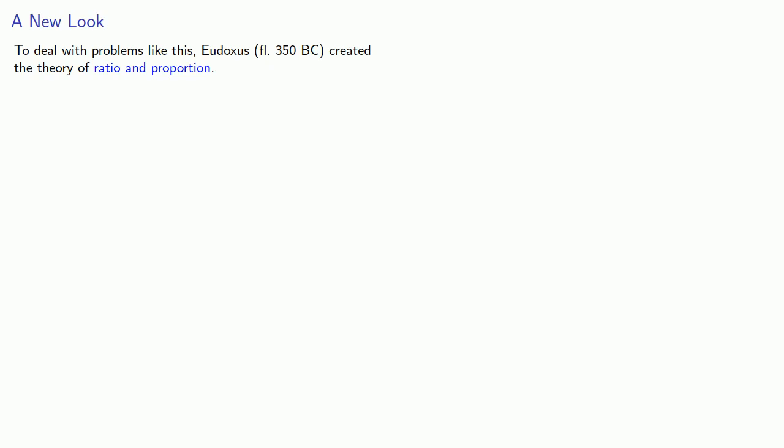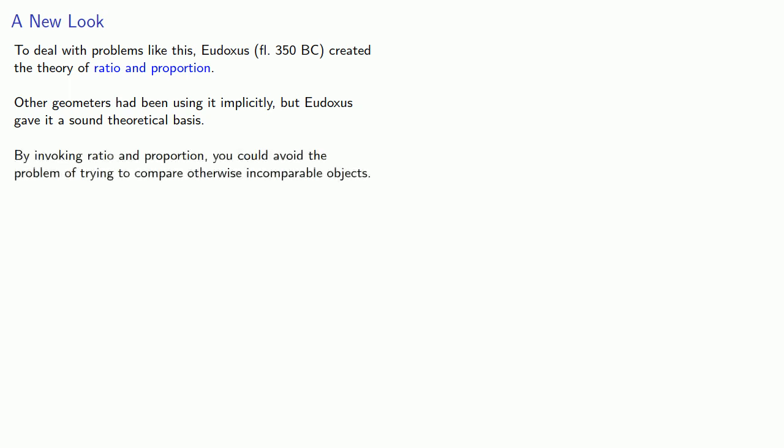Now, when we say created the theory of ratio and proportion, what we mean is this. Other geometers had been using these ideas implicitly, but Eudoxus gave it a sound theoretical basis. And by invoking ratio and proportion, you could avoid the problem of trying to compare otherwise incomparable objects.